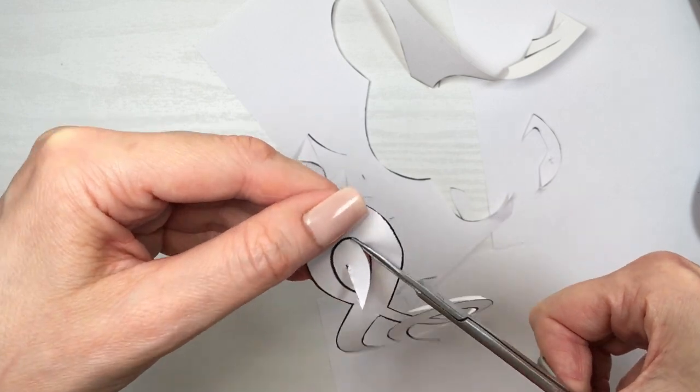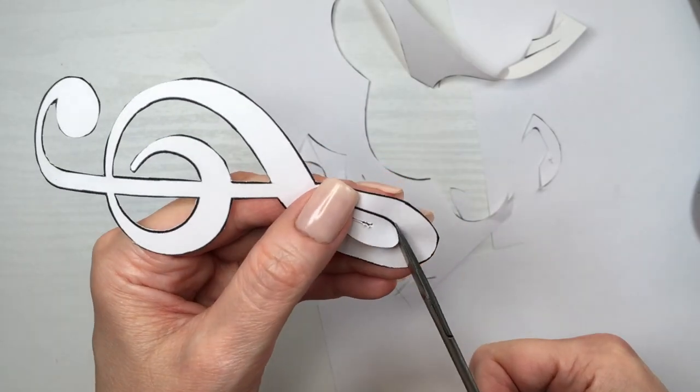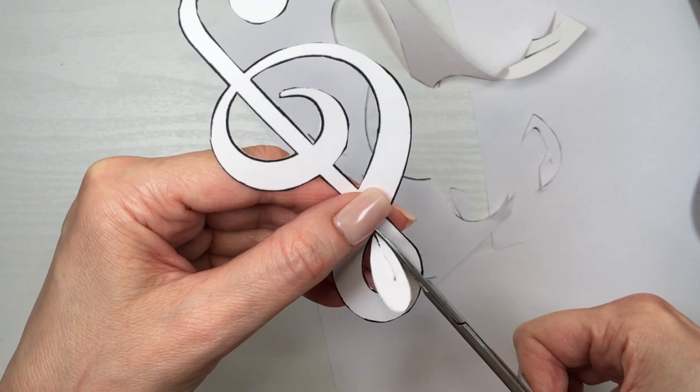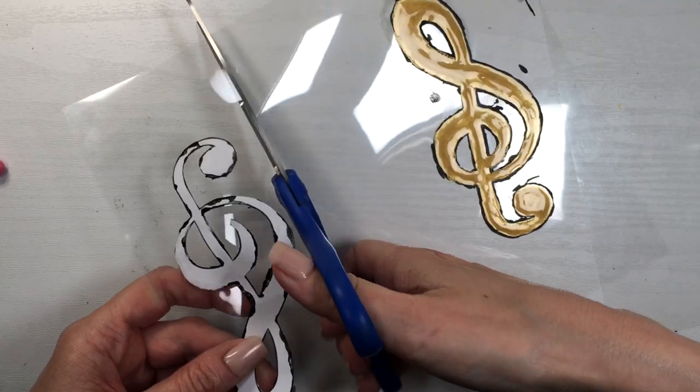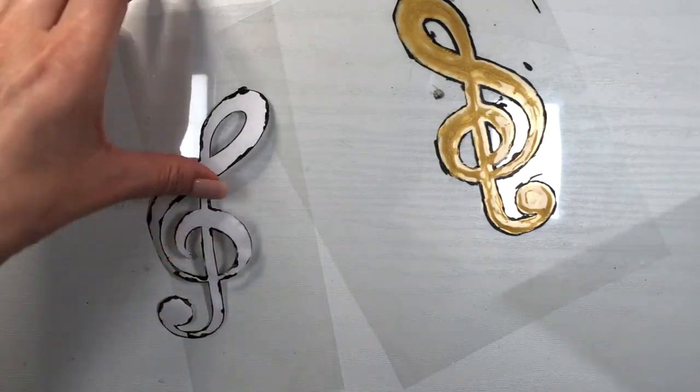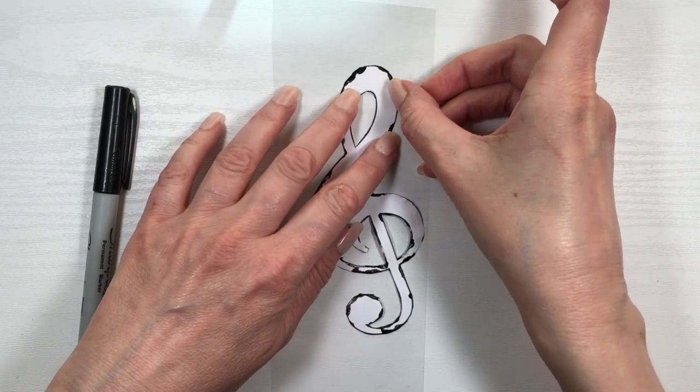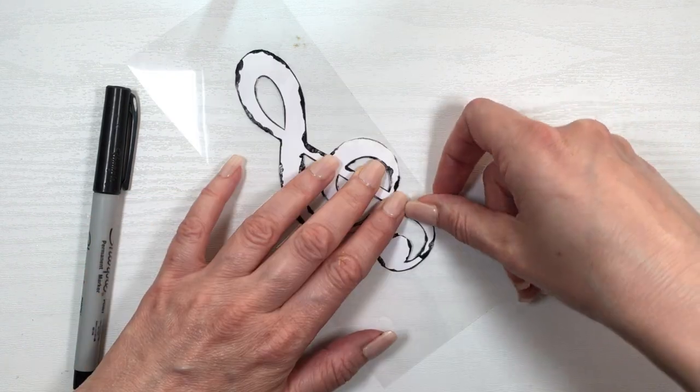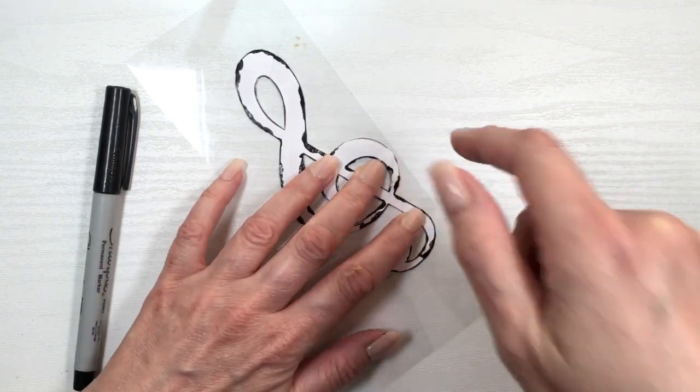And I'm going to be using a piece of acetate that I had from this other music note that didn't work out. It was actually really annoying, by the way, because I spent the most time, energy, and mental capacity figuring out how I was going to do that one, to just have not succeeded. I'm going to show you at the end why, but I'm going to be grabbing a piece of that paper for this one.